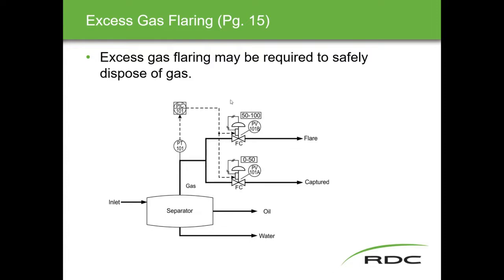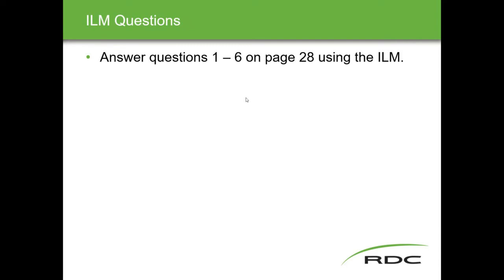The excess gas flaring example is designed to handle gas we can't collect and must send to flare. In a separator with liquid and gas products, if vessel pressure increases beyond what we can capture, the captured gas valve operates from 0 to 50% and the flare valve operates from 50 to 100%. Once pressure hits a certain level, the capture valve is fully open; if gas exceeds that, the signal keeps rising and the flare valve starts to open, so we're still capturing everything we can while also flaring any excess.